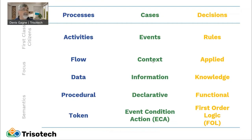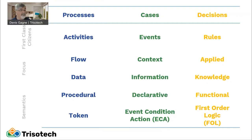Given that we have event context and data which gives us information, CMMN is a declarative language. Rather than prescribing how things should happen, CMMN just declares what can happen. The semantic for CMMN is based on event-condition-action: when a particular event happens, if a condition is met, then do this action — which is different from BPMN where activities are sequenced and the next activity is prescribed by the model itself.